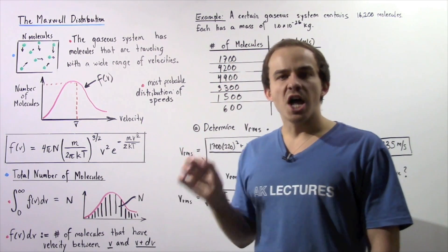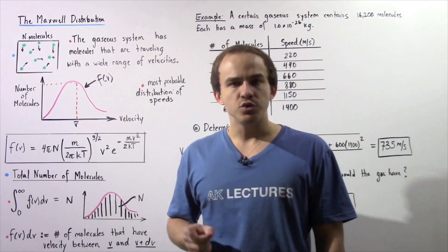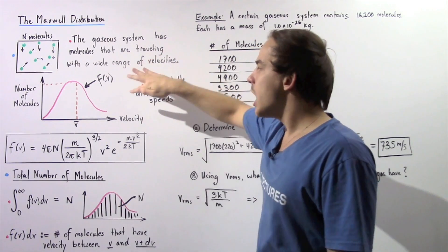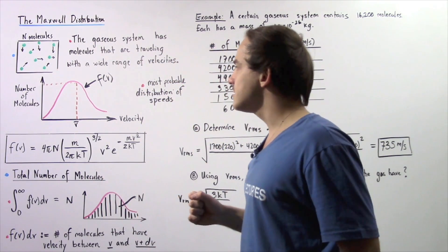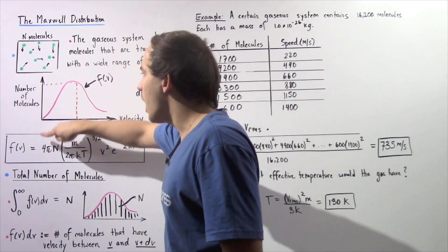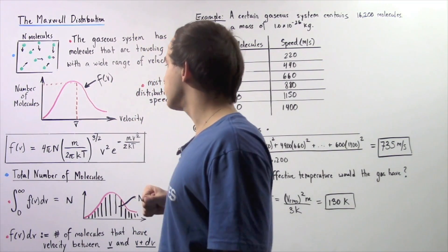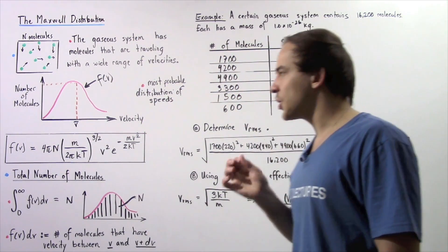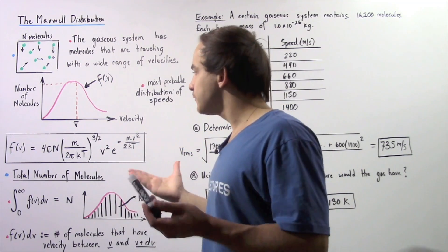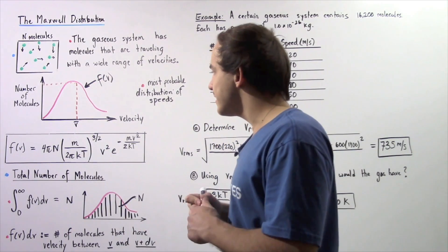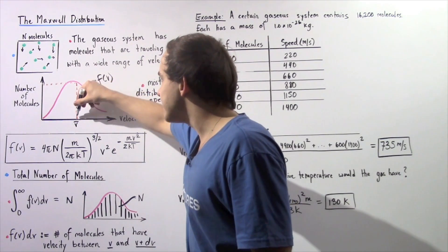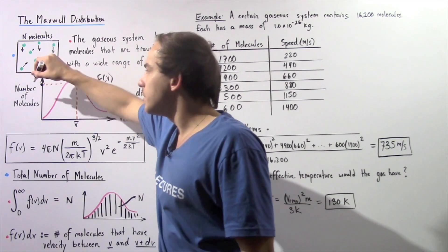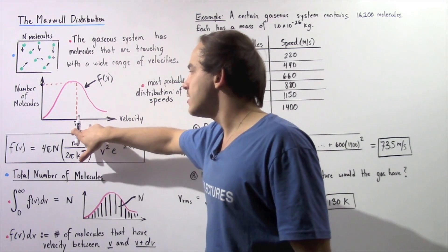If we want to determine the number of molecules with a certain velocity, we have to use the Maxwell distribution. It gives us the most probable distribution of the speeds of our molecules inside our gaseous system, represented by a curve. The y-axis gives us the relative number of molecules and the x-axis gives us the velocity. For example, to determine the average velocity, we use a formula, plot that value on the x-axis, and read off the number of molecules that have that speed.